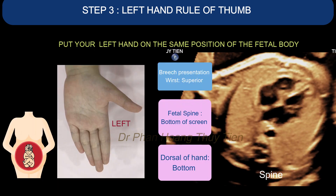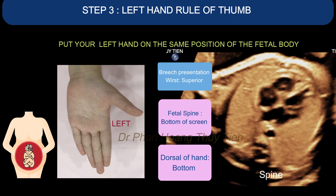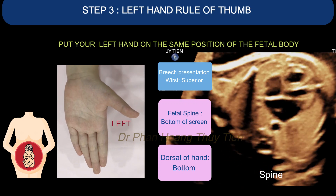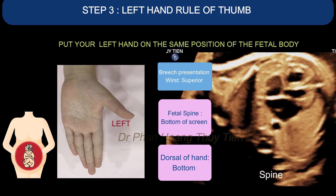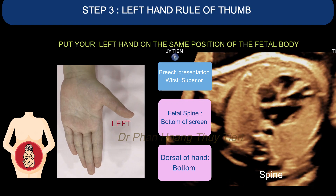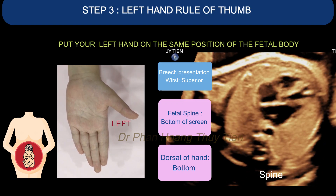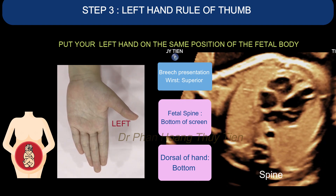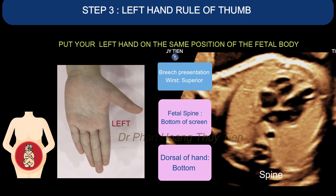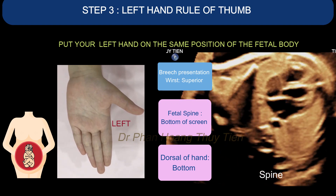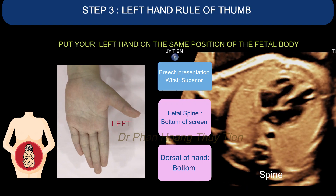Put your left hand in the same position as the fetal body. This is a reminder that since it's a breech presentation, the wrist — which is the fetal head — will be superior. In this example, the fetal spine is at the bottom of the screen, so your hand dorsal will be facing downward.